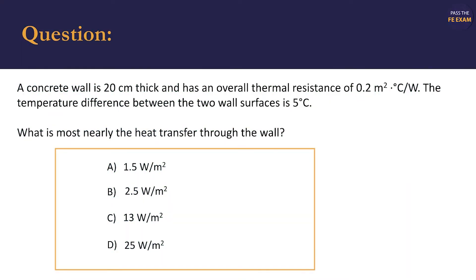This week's problem was solved by Enrique Ivers in engineering training. In this example, we're given a heat transfer problem which reads: a concrete wall is 20 centimeters thick and has an overall thermal resistance of 0.2 square meters degrees Celsius per watt. The temperature difference between the two wall surfaces is 5 degrees Celsius.